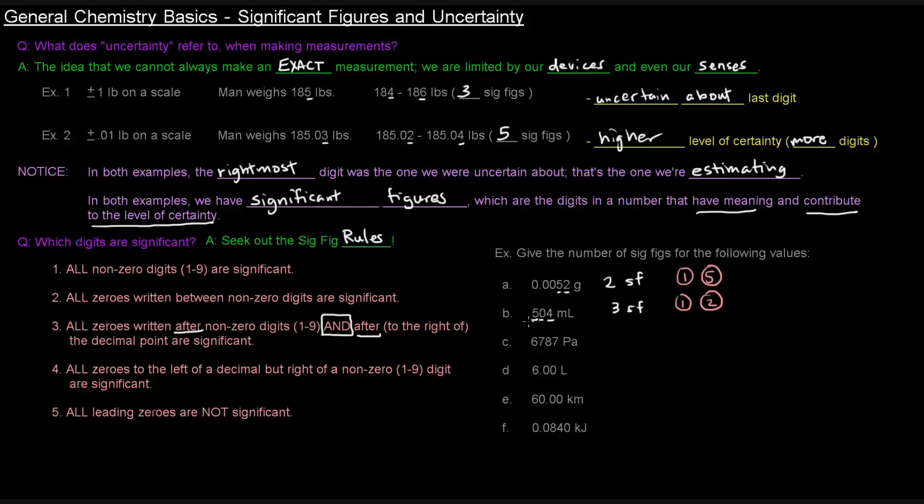Number, or letter C, 6787. That one's easy. All of them are non-zero digits. That's four significant figures. So that one was only rule number one.